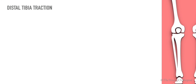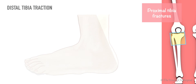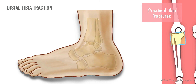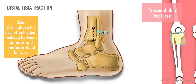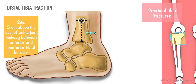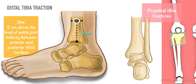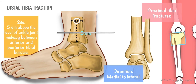The indications for distal tibia traction include proximal tibia or tibial plafond fractures. The pin entry site is marked 5 centimeters above the level of the ankle joint, midway between the anterior and posterior borders of the tibial shaft. The pin is inserted in a medial to lateral direction, avoiding injury to the saphenous vein.